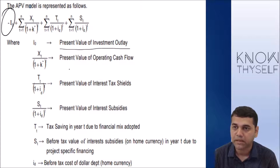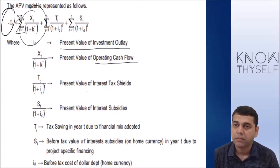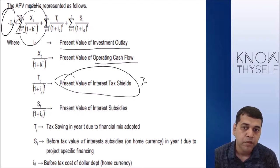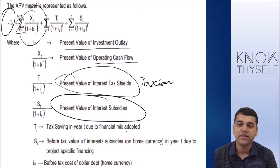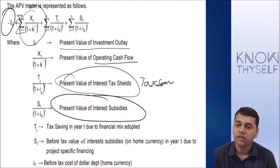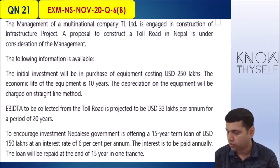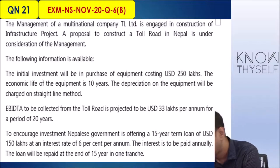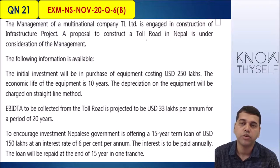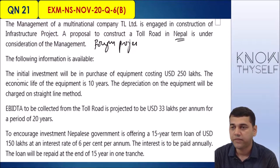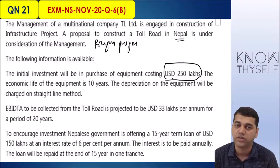The APV model formula: outflow = PV of operating cash flows + PV of interest tax shield + PV of interest subsidies. The model separates different components of cash flows and discounts them at rates consistent with their risk. If the base NPV is viable, no further evaluation is needed; if not viable, additional evaluation considers financing benefits. Question 21 - mark this question important: the management of a multinational company is evaluating construction of a toll road in Nepal.